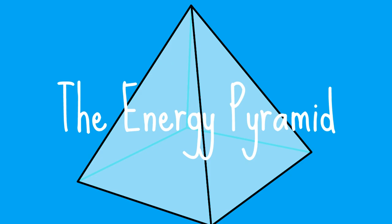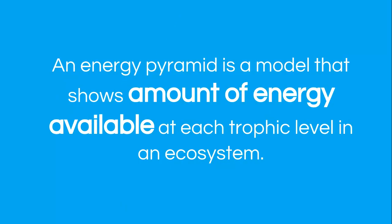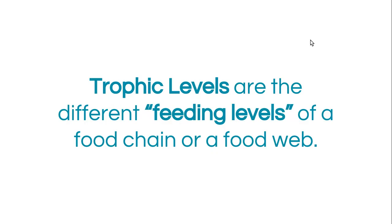Food webs and food chains are really awesome tools to show you how the flow of energy occurs in an ecosystem. Energy pyramids not only can do that, but they can show you the amount of energy as well. Energy pyramids are models that show the amount of energy available at each trophic level in an ecosystem. Trophic levels are the different feeding levels of a food chain or a food web.